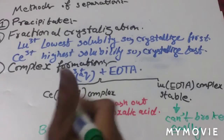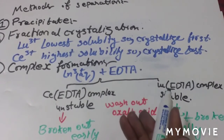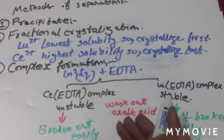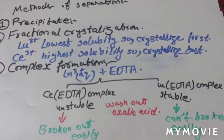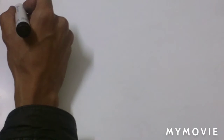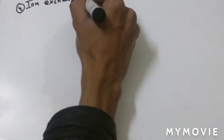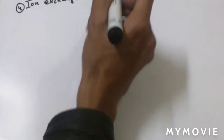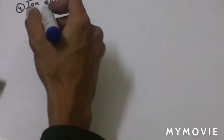In this way we can separate small-sized, high-covalent-character lanthanides from large-sized, low-covalent-character lanthanides. The fourth method is the ion exchange method.